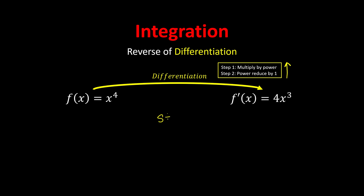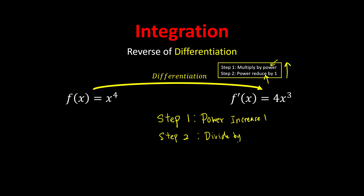To integrate, we just reverse the steps. Step one: just now the power reduced by one, so now the power is supposed to increase by one. Step two: just now we multiplied by the power, so now we're supposed to divide by the power. Let's try to see whether it works — since we have 4x cubed, we want to reverse it to get back our original equation. Step one: the power increases by one.